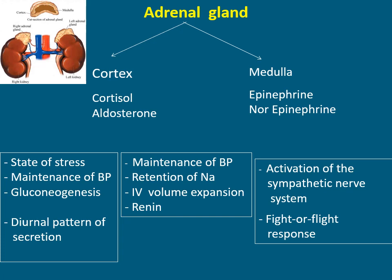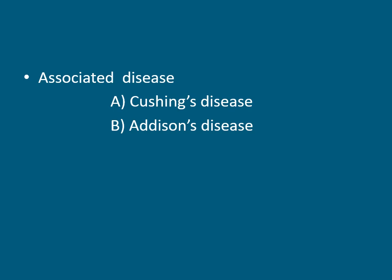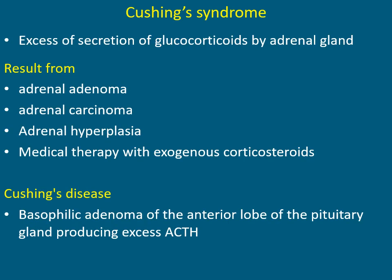Associated diseases of the adrenal gland are of two types: Cushing's disease or syndrome, and Addison's disease or syndrome. First, we are discussing about Cushing's syndrome. This is a very important topic for your exams — it is a two-mark or four-mark question in your university exams.